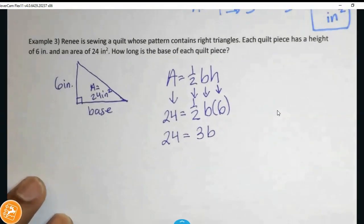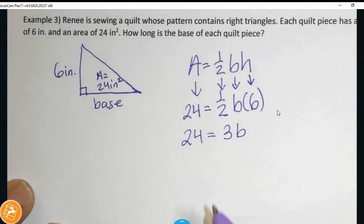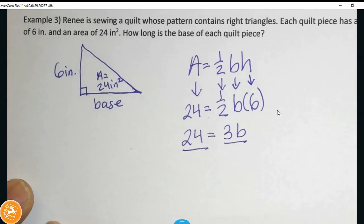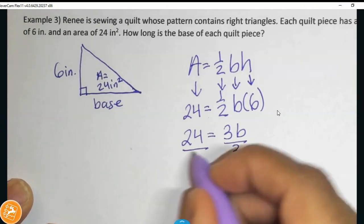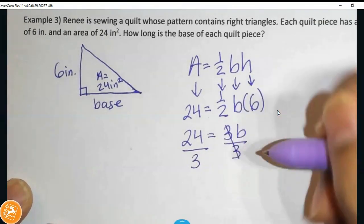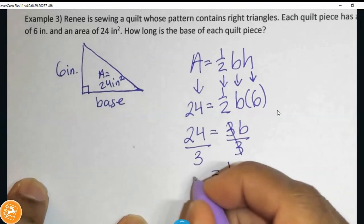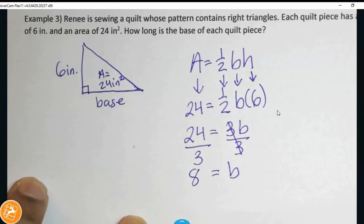And guys, this is just like one of our equation problems. 24 is equal to 3B. Remember, goal of an equation is to get B by itself. So, I divide both sides by 3. That way, I get base by itself. 24 divided by 3 is going to get 8.